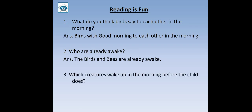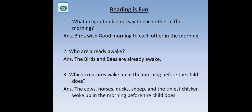Let us see question number 2: Who are already awake? Awake matlab jaagna — kaun pehle se jaag raha hai? Toh humne poem mein kya padha? Kaun jaag raha tha pehle se? Yes — birds and bees jaag rahe the pehle se. Toh answer hai: The birds and bees are already awake. Question number 3: Which creatures wake up in the morning before the child does? Aise kaun se creatures the — birds, animals — jo girl ya boy ke pehle hi jaag gaye the? Yes — the creatures were the cows, horses, ducks, sheep and the tiniest chicken woke up in the morning before the child does.